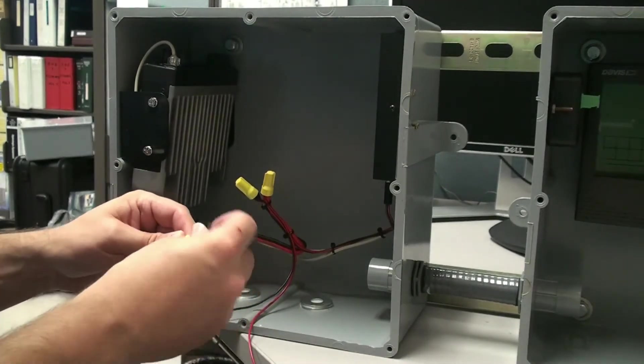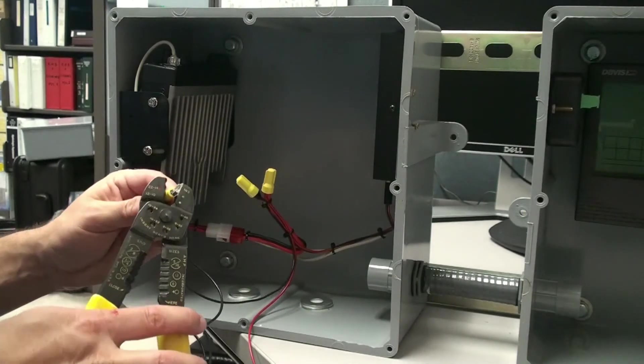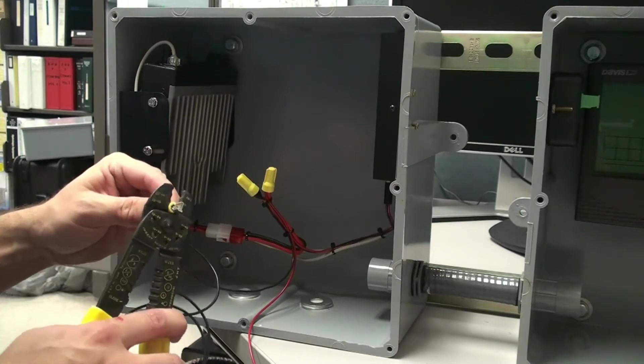At this point, we can crimp on our battery connectors, being sure to add another set of wires under those connectors to allow us to parallel daisy chain to the next battery.